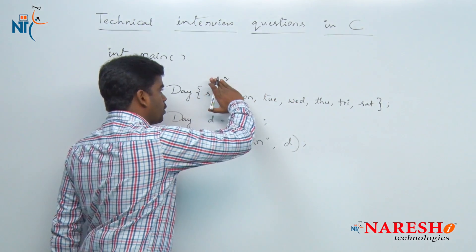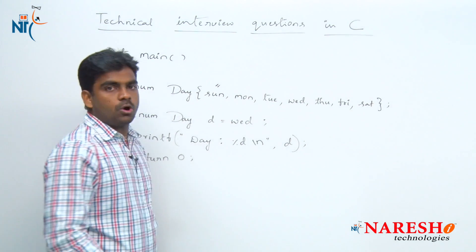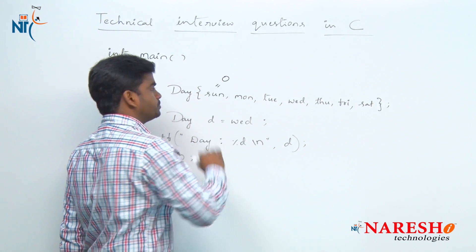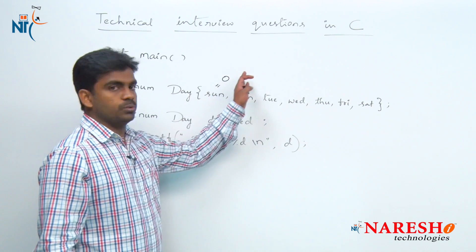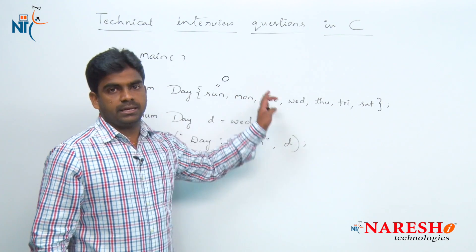For example, if you are not setting any value, the constant integer values start with 0. Sunday is 0, Monday is 1, so like that it will go.